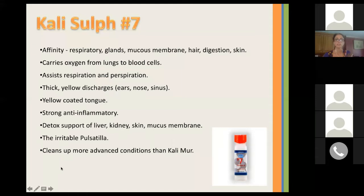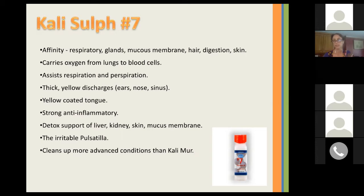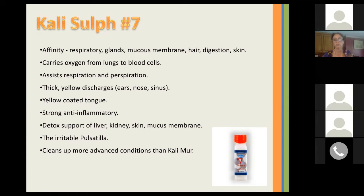Kali Sulf is the seventh cell salt. It has an affinity for the respiratory system, glands, mucous membranes, hair, digestion, and skin. It helps carry oxygen from the lungs to the blood cells and assists in respiration and perspiration. With Kali Sulf, you remember thick yellow discharges — from the ear, nose, or sinus — and there may be a yellow-coated tongue. It's a strong anti-inflammatory and helps with detox support of the liver, kidney, skin, and mucous membranes. It's known as the irritable Pulsatilla, as the flower Pulsatilla has a lot of Kali Sulf in it. It helps clean up more advanced conditions than Kali Muir.